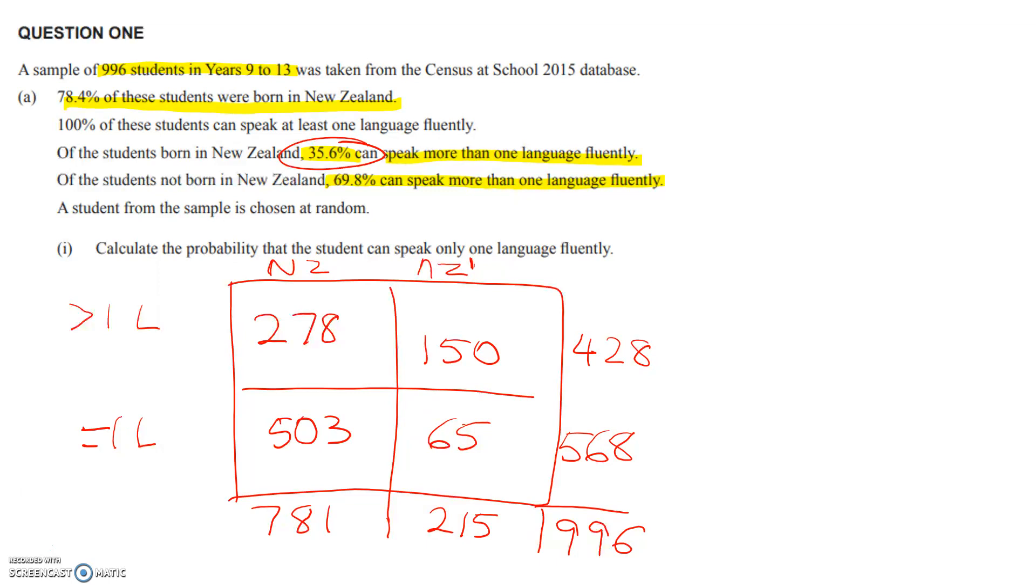Now we want the probability that the student can speak only one language fluently. We'll always start with the denominator. Which students are in my sample? It's the whole lot. Out of 996, we've got 568 who can speak one language fluently. And we're going to give that as a percentage: 57.0%. Now I did it as a table because I'm going to use those numbers in my next question.